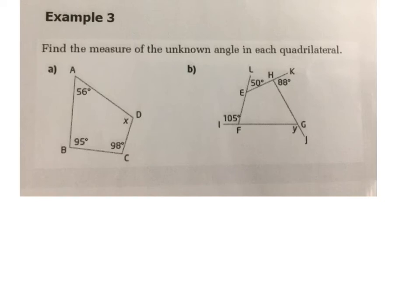Okay, so in this example, we have to find the measure of the unknown angles in each quadrilateral. So in example A, which angle is unknown? How would I label the angle that's unknown? Someone read it to me.